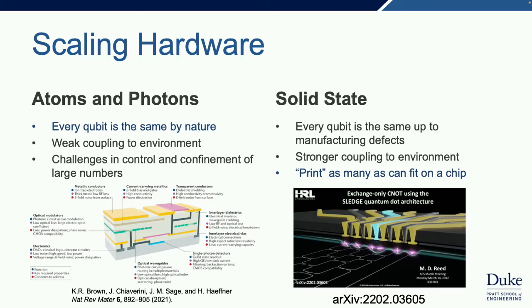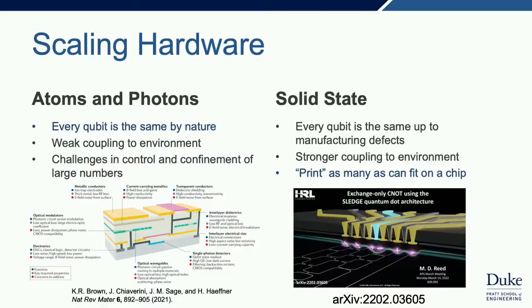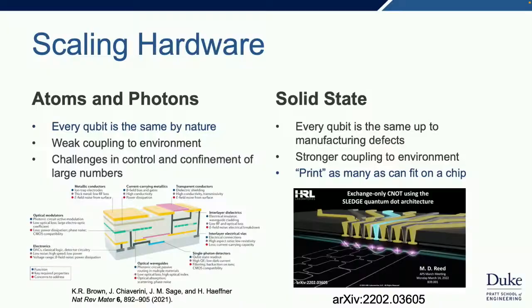On the solid-state side, every qubit is the same up to manufacturing defects, and we can make great chips for classical devices. But the tolerances for making quantum devices are much, much harder. As a result, there's stronger coupling to the environment—small changes, even a few atoms moving, could cause problems. My colleagues who work on this always say, 'We can print as many qubits as we want.' But snarkily, why have they chosen to print only six? In fact, there are only three qubits in this picture—actually only two qubits—because they have to use three spins per qubit. So this 'print as many as you can fit on a chip' idea hasn't panned out so far.